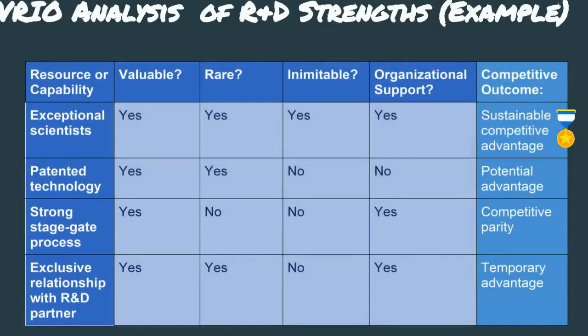Now let's look at our exclusive relationship with our R&D partner. We might conclude that it's valuable and rare, and that we have good organizational support to leverage it. On the other hand, if we think there are similar firms our competitors could partner with, we might be worried that it could be imitated. Therefore, it only offers us a temporary advantage.